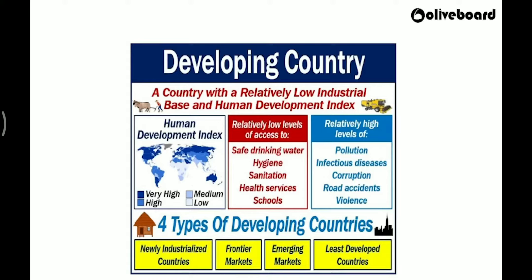In some definitions, classification may also go based on income — whether it is a developed nation or a least developed nation. Based on per capita income, it may change. So, a developing country basically has a low human development index, low industrialization, high levels of population, high levels of pollution, and high levels of corruption. All these are characteristics you can find mostly in developing countries.